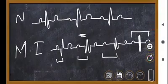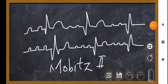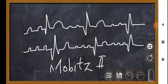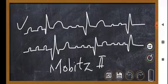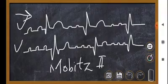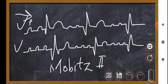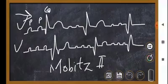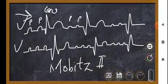Now this is the example of mobits type 2 heart block, and there are two ECGs, first and second. If we focus on the first ECG, we can appreciate that this is a P wave, and again this is a P wave, this is QRS complex.